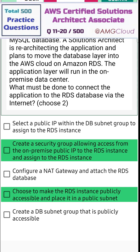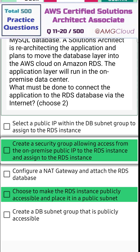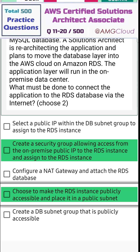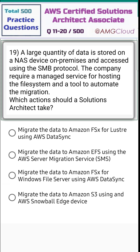The correct answers are option two — create a security group allowing access from the on-premises public IP to the RDS instance and assign it to the RDS instance — and option four — choose to make the RDS instance publicly accessible and place it in a public subnet.